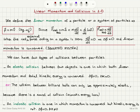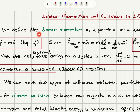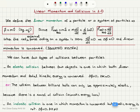We will talk about the concept of linear momentum and the special case of collisions in one dimension. First of all, we define the linear momentum of a particle or a system of particles as a vector quantity. It's the product of the mass multiplied with the velocity. For a particle this would be the particle mass; for a system of particles this would be the total mass multiplied with total velocity. The SI unit of linear momentum is kilograms meters per second.